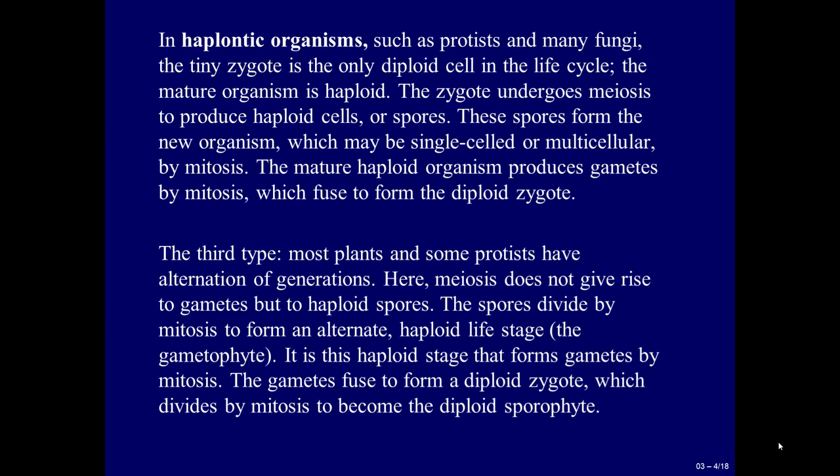In haplontic organisms, such as protists and many fungi, the zygote is the only diploid cell in the life cycle. The mature organism is haploid. The zygote undergoes meiosis to produce haploid cells or spores. These spores form the new organism, which may be single-celled or multicellular, by mitosis. The mature haploid organism produces gametes by mitosis, which fuse to form the diploid zygote.